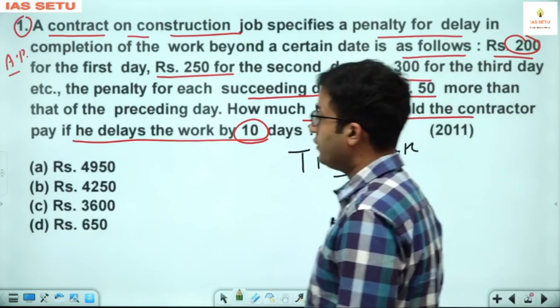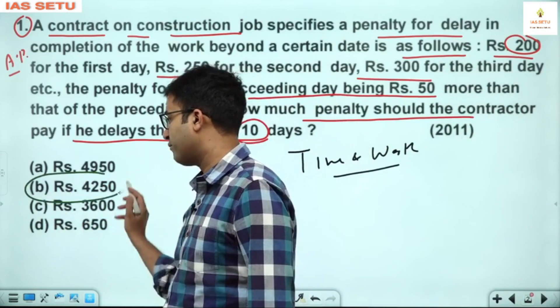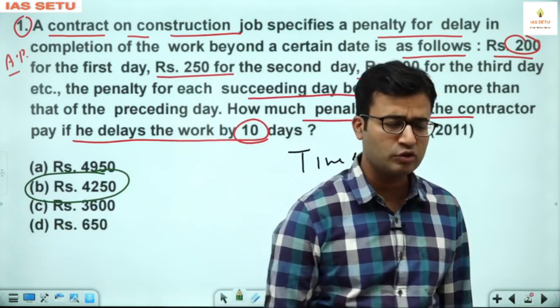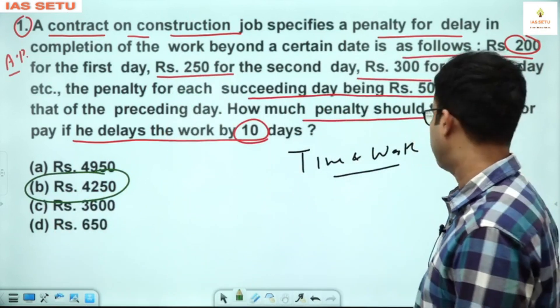Total penalty for 10 days that the contractor has to pay is 4,250 rupees. First question answer is B — 4,250. It is an arithmetic progression concept.